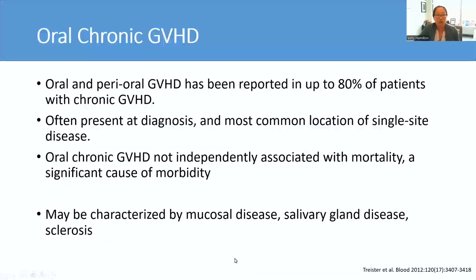Moving on to oral chronic graft-versus-host disease, oral and perioral GVHD has been reported in up to 80% of patients with chronic GVHD. It's often present at diagnosis and is the most common location of single-site disease. Although oral chronic GVHD may not necessarily be independently associated with mortality, it's a very significant cause of morbidity and patient discomfort. Oral chronic GVHD is characterized by mucosal disease, salivary gland disease, and sclerosis.